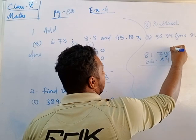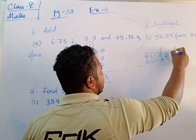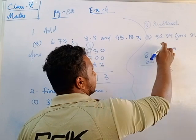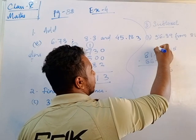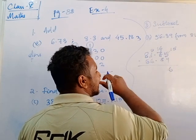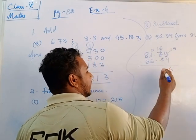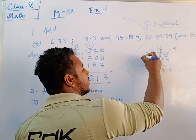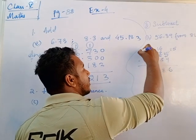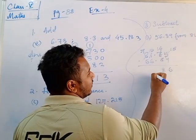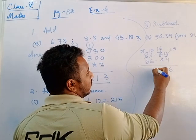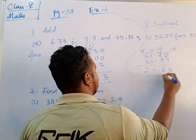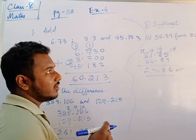Subtracting step by step: 15 minus 9 is 6; 6 minus 8 not possible, borrow — 10, giving 7; 10 minus 6 is 4; 7 minus 5 is 2. So the answer is 249.86.